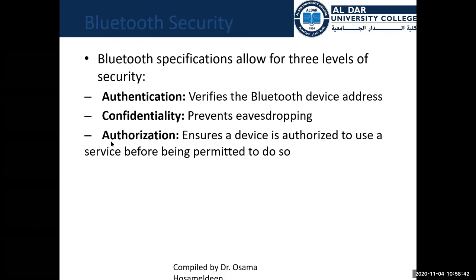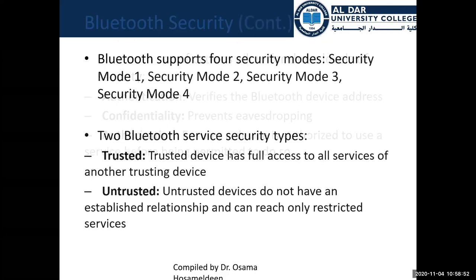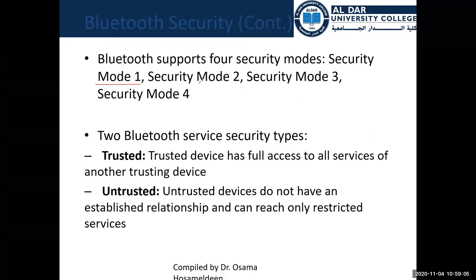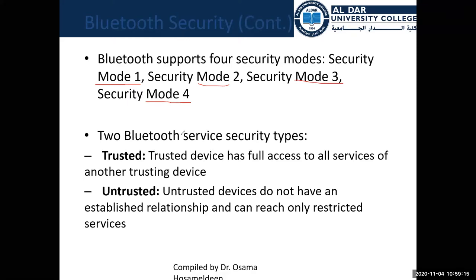Bluetooth supports four security modes: security mode one, security mode two, security mode three, and security mode four. Bluetooth service security types have two types: trusted and untrusted. In trusted mode, the device has full access to all services of another trusted device — for example, a lounge speaker in your house that any family member can freely connect to.